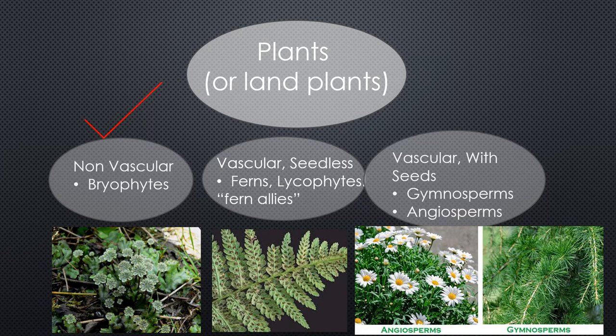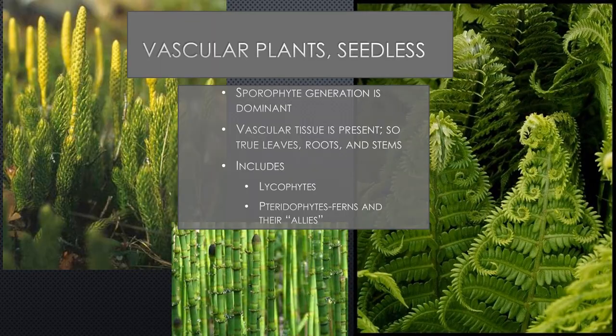Non-vascular plants are done. Now we move on to vascular plants that are seedless. Ferns are the best example. All seedless vascular plants are sporophyte dominant — unlike bryophytes which were gametophyte dominant, these more complex plants are dominated by the diploid sporophyte generation. They have vascular tissue, so now we can use the terms leaves, roots, and stems properly. This includes our ferns, fern allies, and lycophytes.